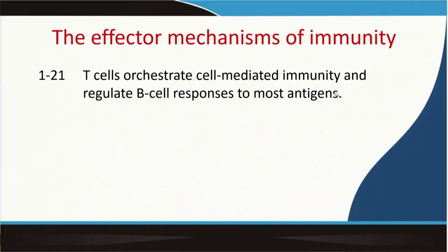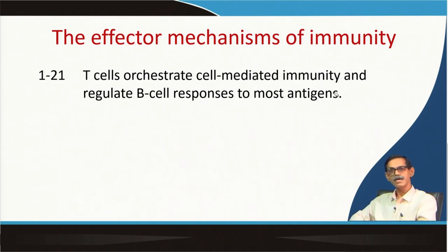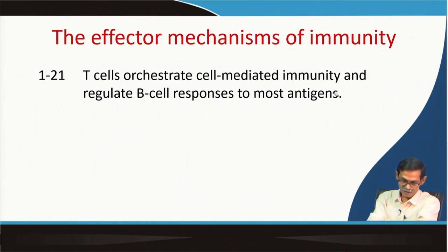The effector mechanism of immunity — T cells actually orchestrate the cell-mediated immunity and regulate B cell response to most antigens. In the next half hour, we will see what T cells are doing and how many ways they help adaptive immunity, because T cells need to be activated specifically against the pathogen or antigen; it is not general like innate immunity.